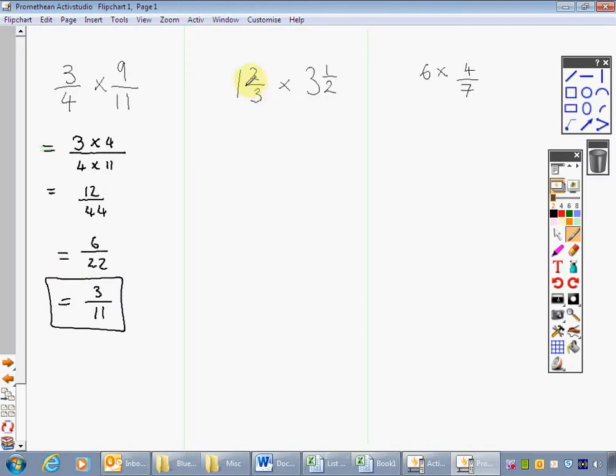Second example. I've now got 1 and 2 thirds times 3 and 1 half. I need to change it to top-heavy fractions so I can actually do the multiplication. So 1 and 2 thirds, in that 1 there are 3 thirds, so a total of 5 thirds.